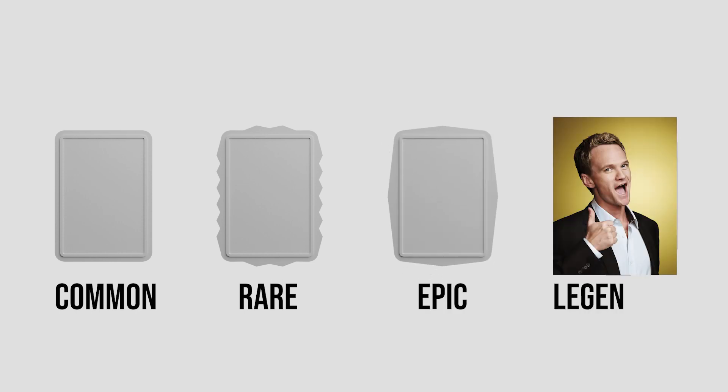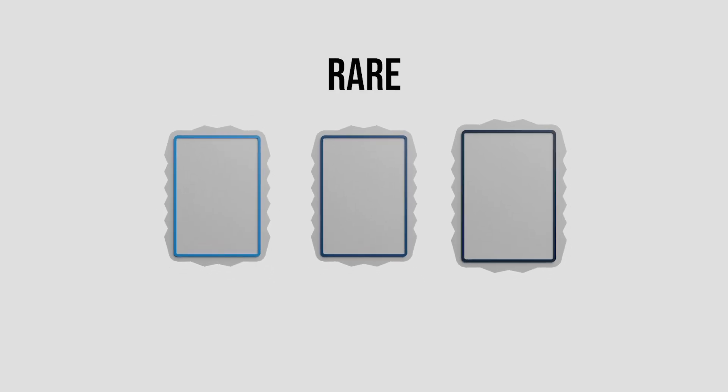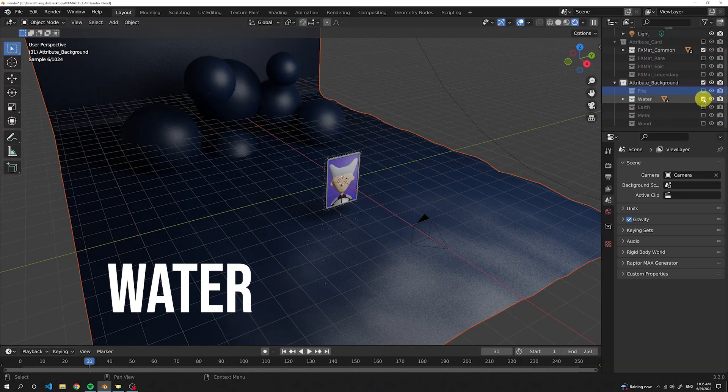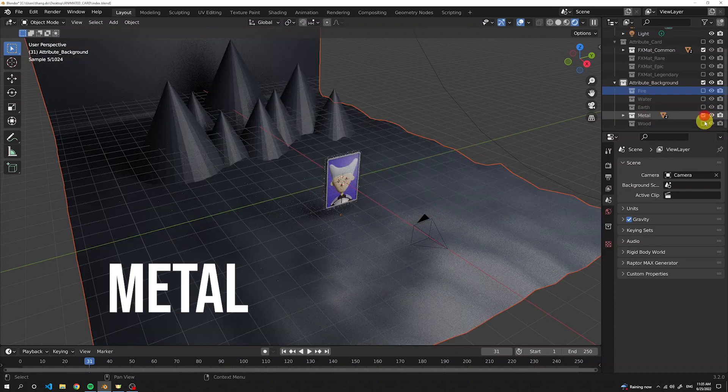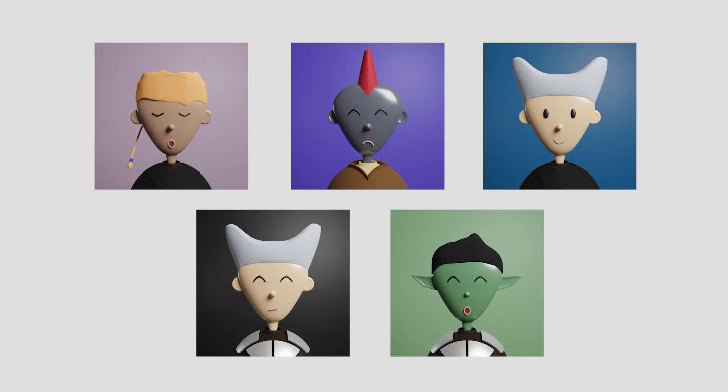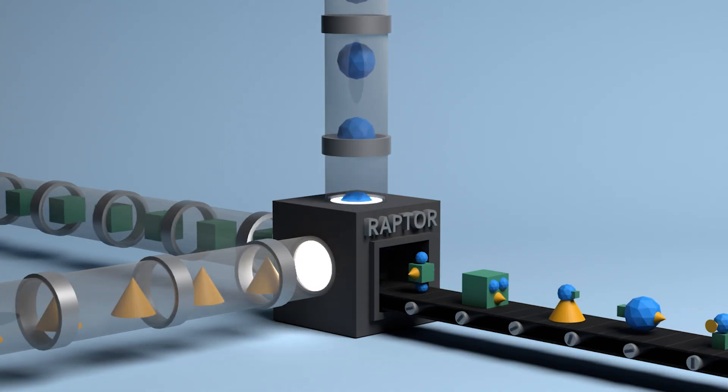The card will have four different types: common, rare, epic, and legendary. Each type will have a slightly different shape and three different shades of the same color. We also have a background with five different types: fire, water, earth, metal, and wood. The content for the cards will be a collection of sober jedis created in a previous video. To generate unique combinations, I will use the Raptor plugin.